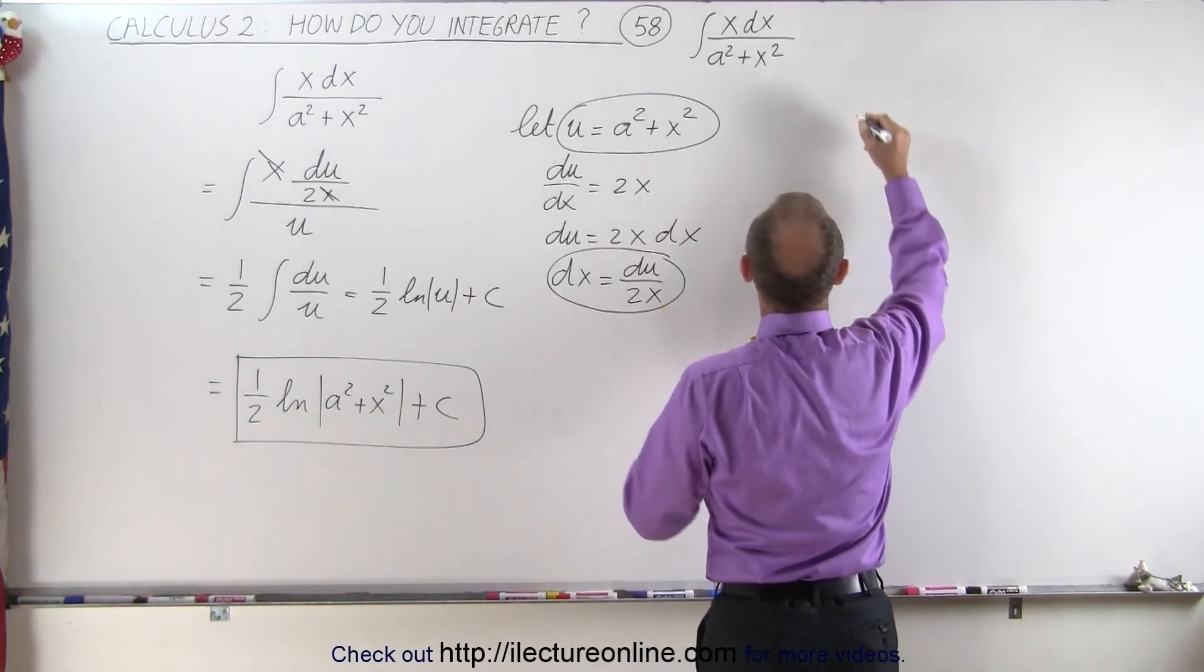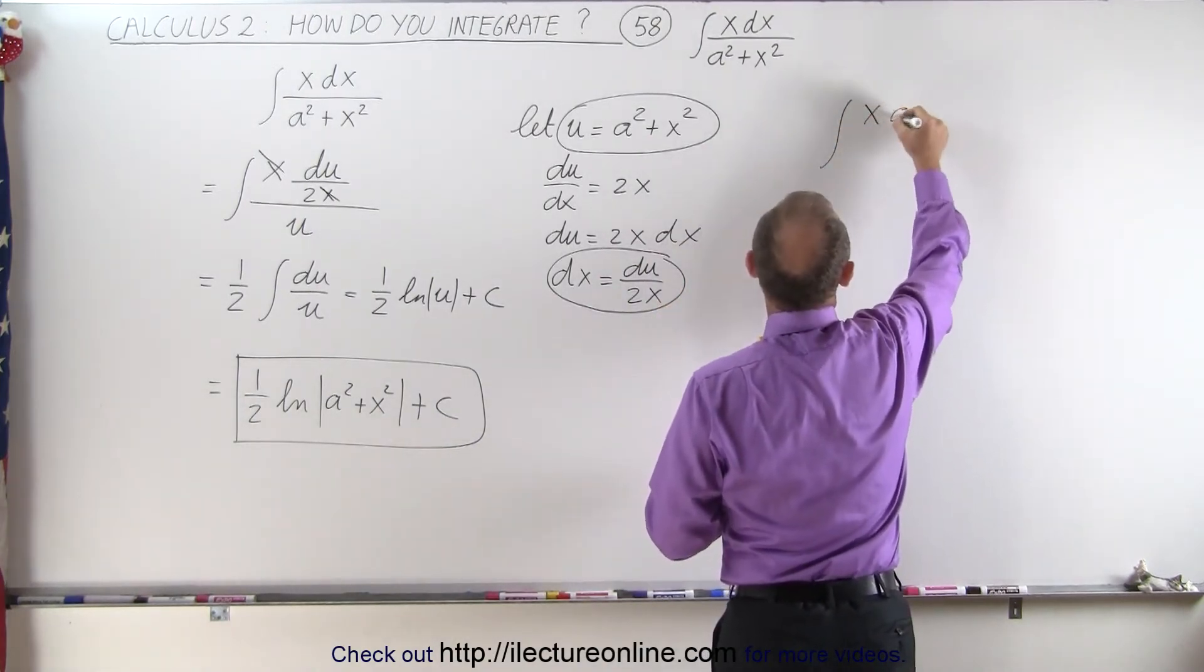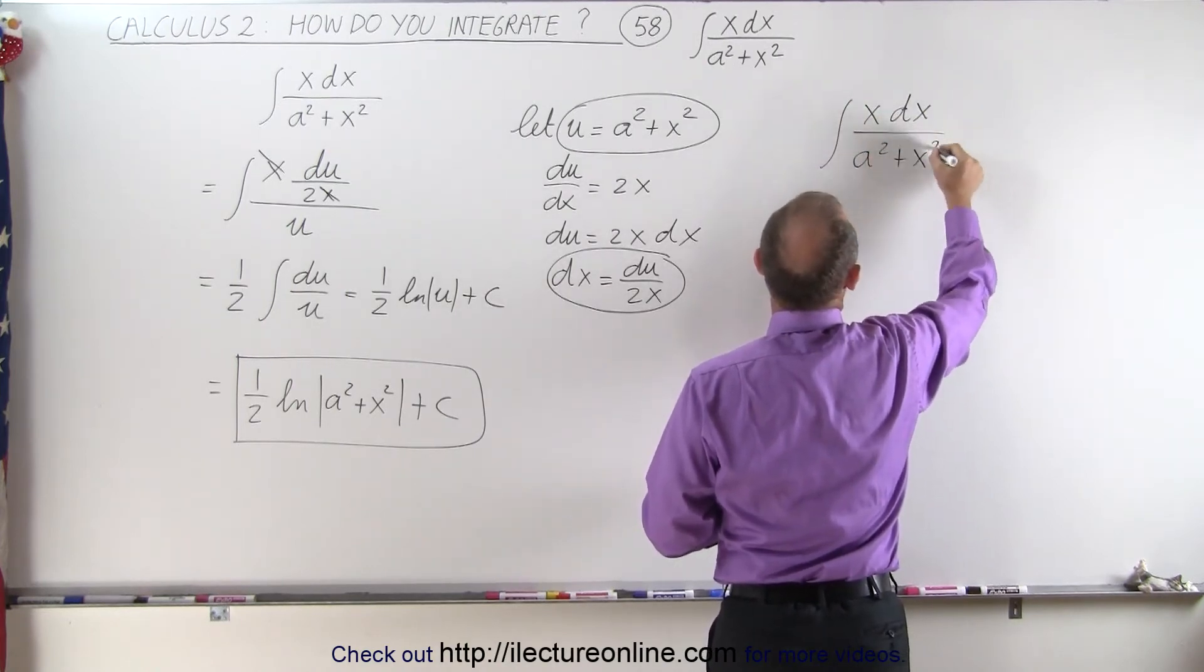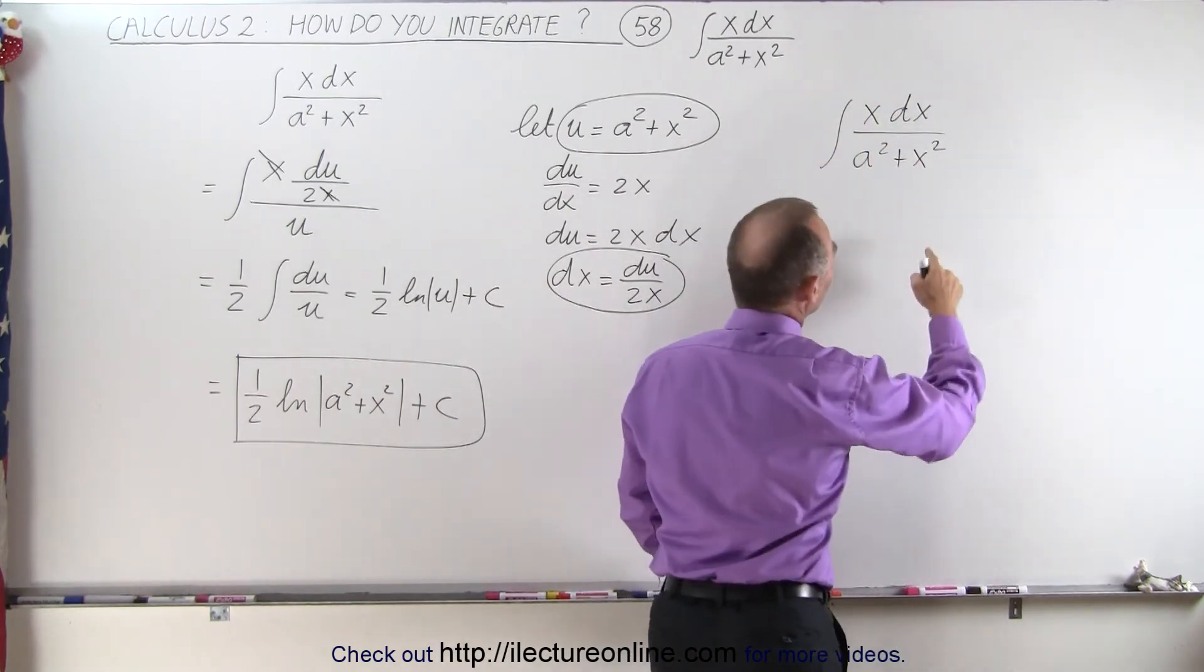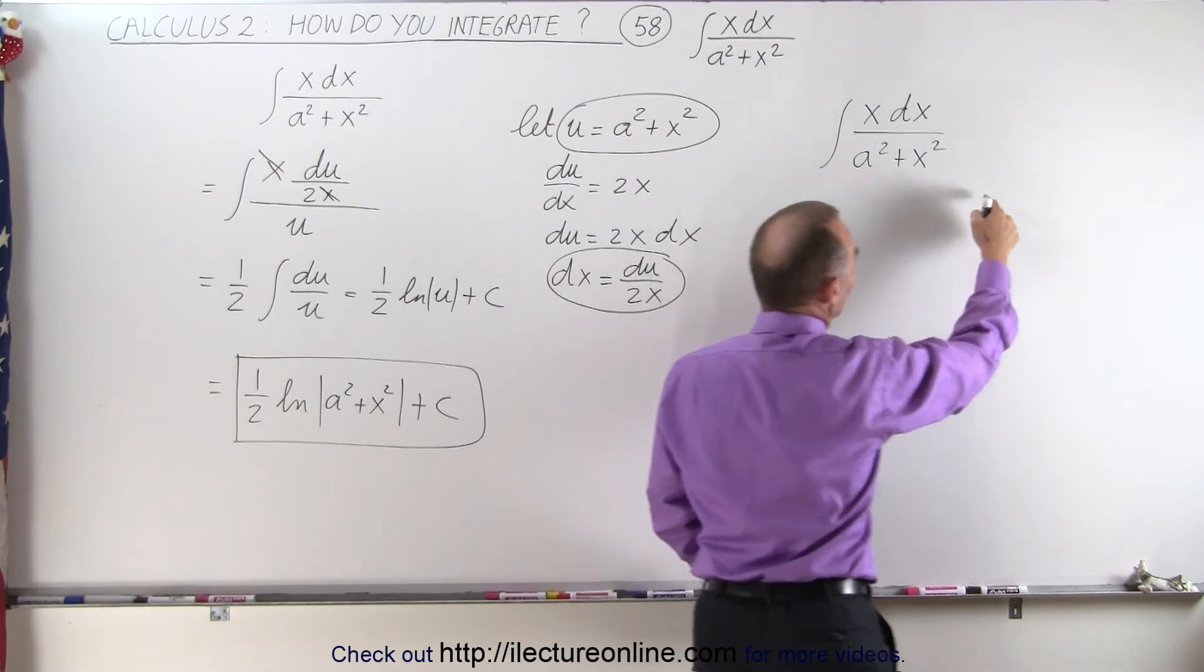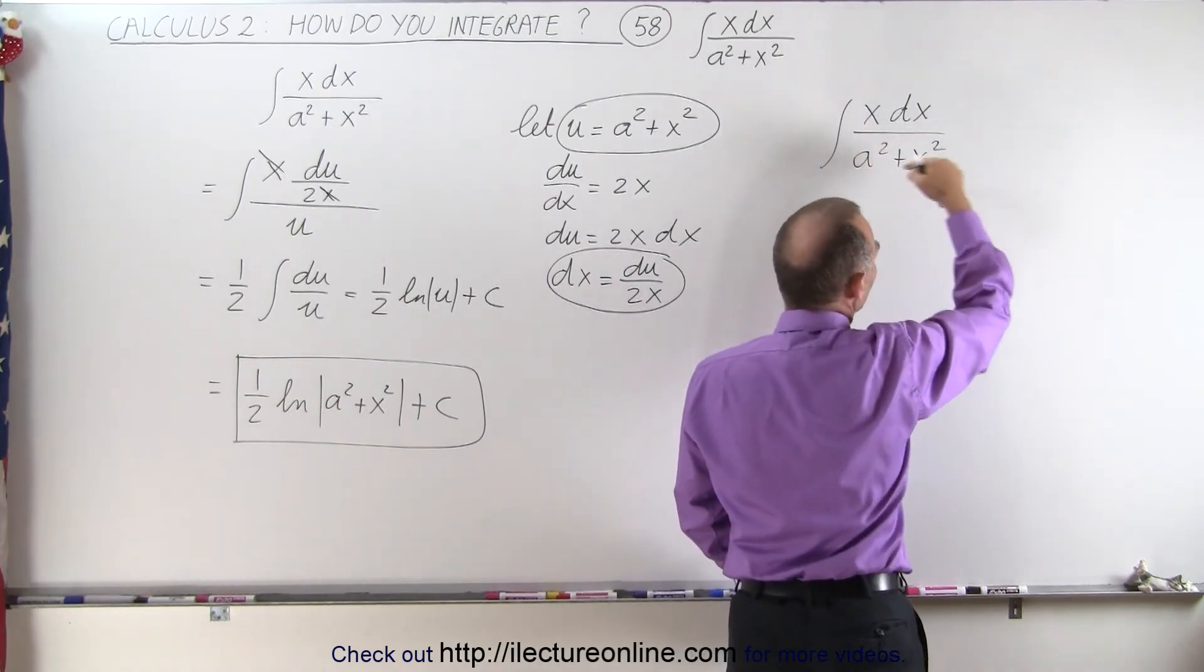Let's say we have the integral, again, of x dx divided by a squared plus x squared. And then we realize that in the denominator, we have a squared plus x squared, and the differential of the denominator is 2x dx.